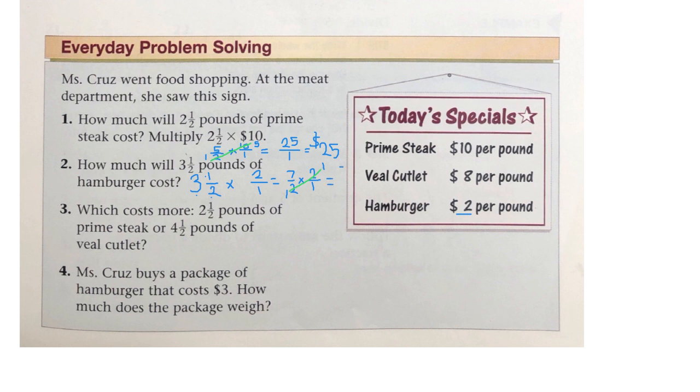Now 7 times 1 is 7. 1 times 1 is 1. 7 over 1 is $7.